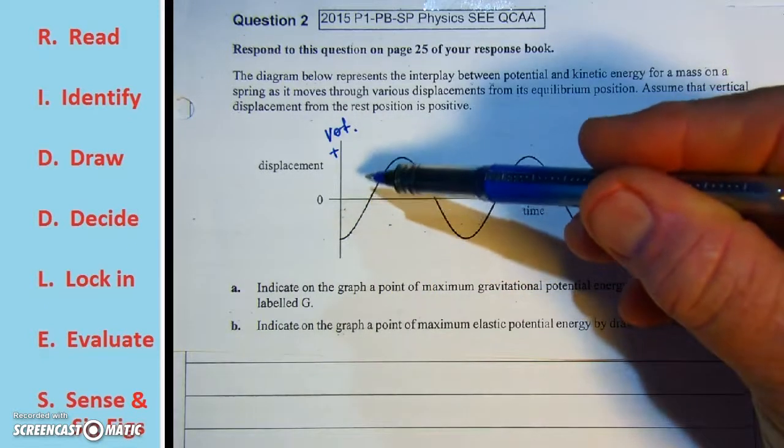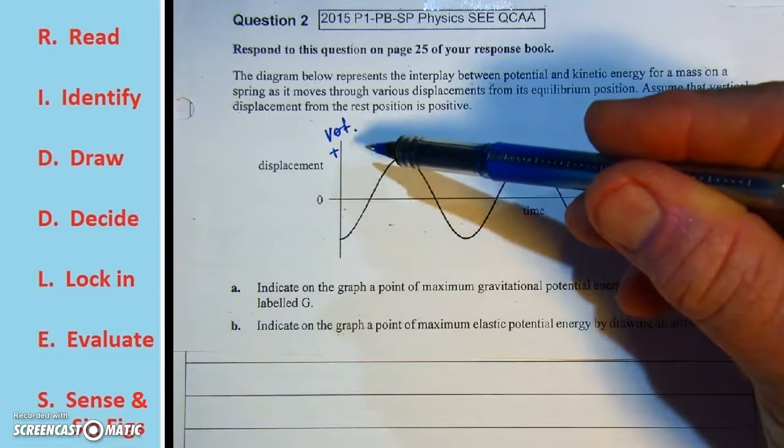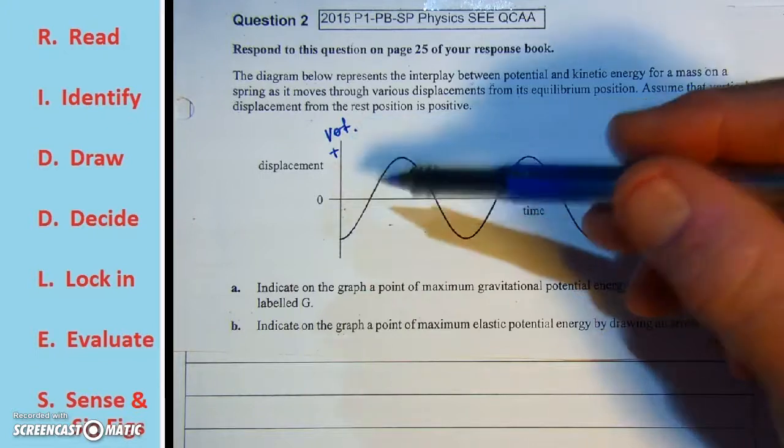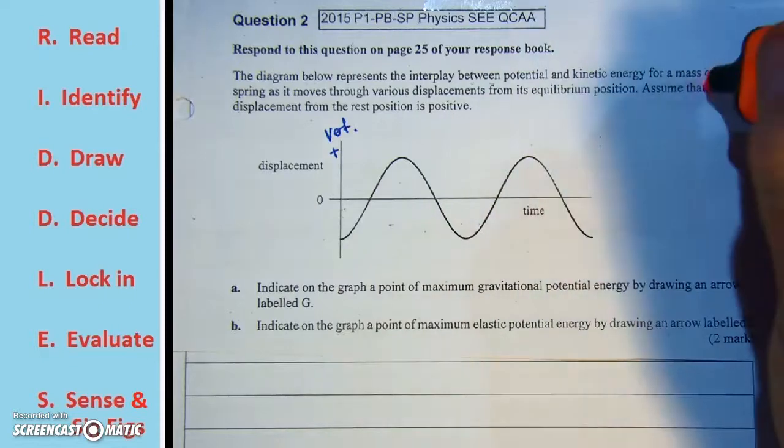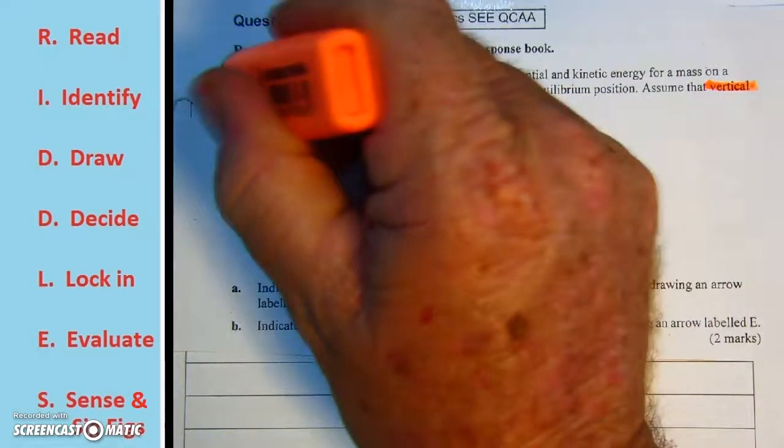as we move upwards, it talks about assume the vertical displacement from the rest position is positive. So that's the important bit here. So we really need to identify that.